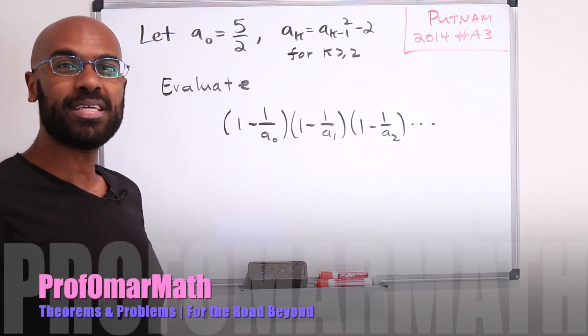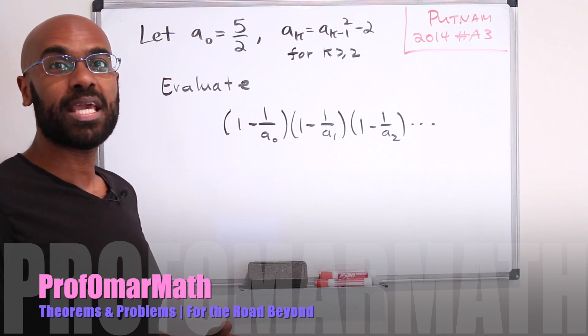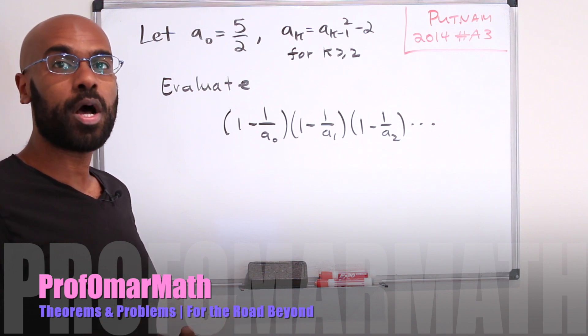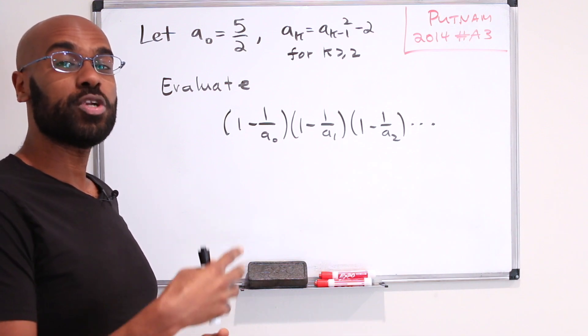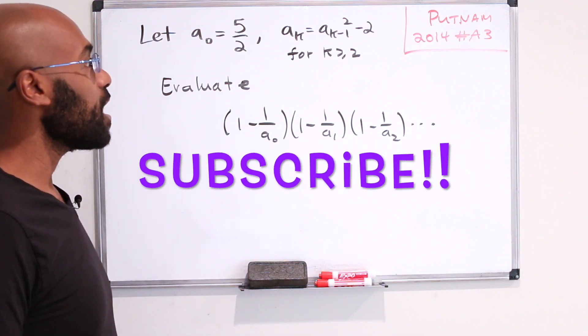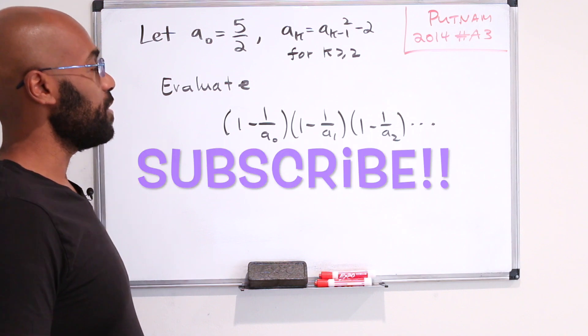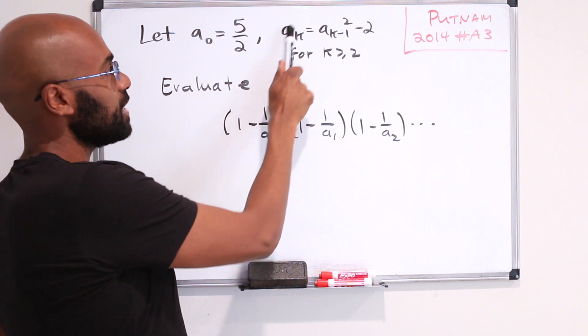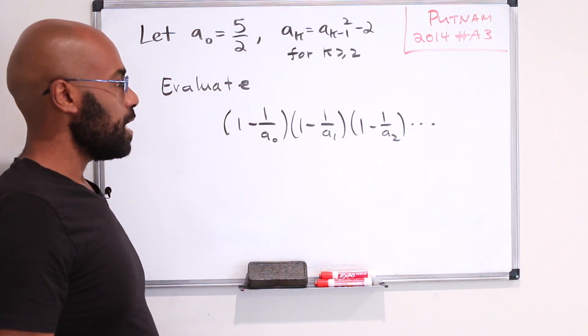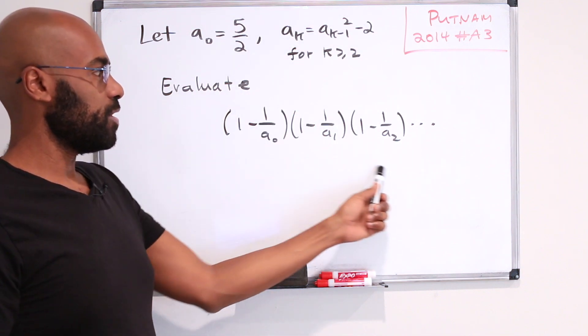Hey, welcome to today's video. I'm Prof Omar. This channel is dedicated to undergraduate theorems and problems for your journey through the undergraduate and to prepare you for their journey beyond. Today we're going to talk about Putnam 2014 number A3. The problem states that you have a sequence that starts with five halves and satisfies this recurrence right over here and it asks you to evaluate this infinite product.